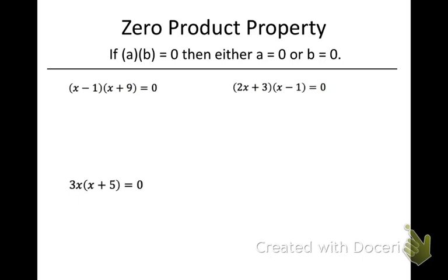You will use this rule once you have factored your quadratics to solve them. If two things multiplied together equal zero — we can represent those two things by A and B — so if A times B equals zero, then either A has to equal zero or B has to equal zero. One of the two things has to equal zero. It's just a logical thought in math.